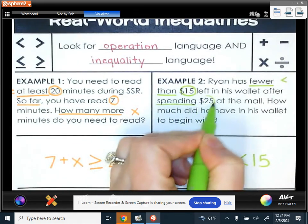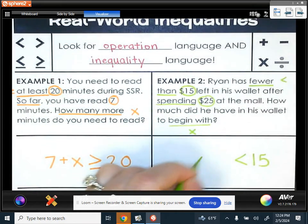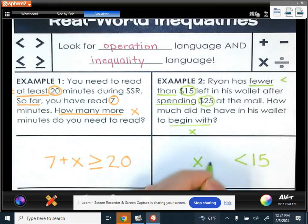That's after spending $25. So when you spend money, that's being taken away from what you originally had. So we're trying to figure out what he originally had. What did he begin with? And that's going to be our x here. So whatever he had to begin with minus the $25 that he spent has to be less than $15. So that's our inequality for that situation.